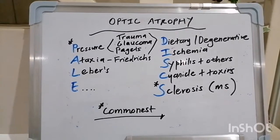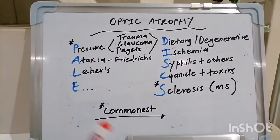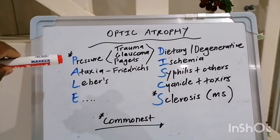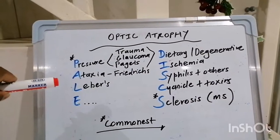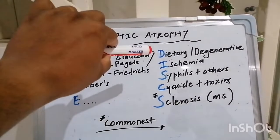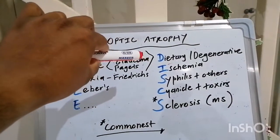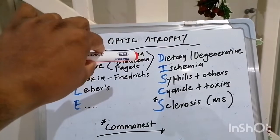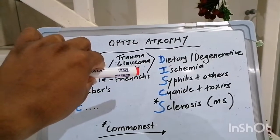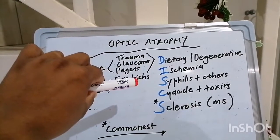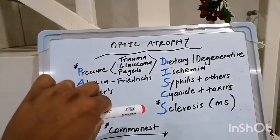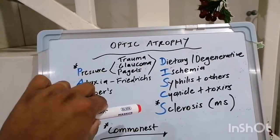Quick recap — optic atrophy causes: PALE DISCS, but the E stands for nothing. P for pressure — trauma, glaucoma, and Paget's. A for ataxia. L for Leber's. D for dietary — B12 deficiency and degenerative issues like retinitis pigmentosa. I for ischemia from central retinal artery occlusion. S for syphilis and other infections. C for cyanide and other toxins. S for sclerosis.